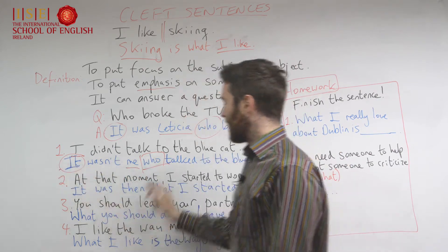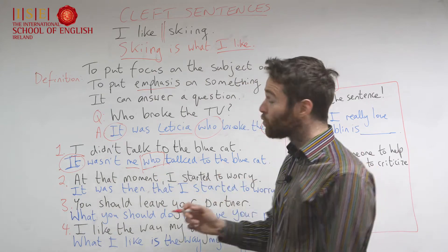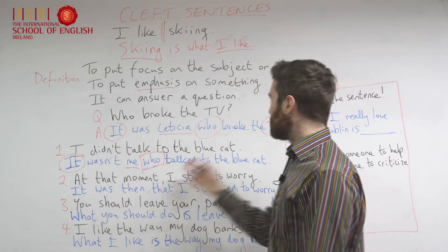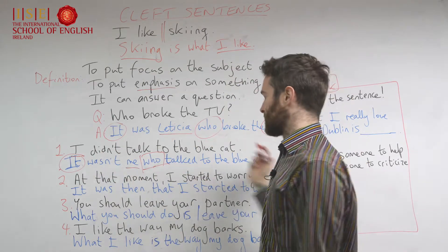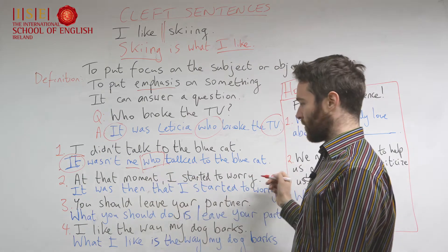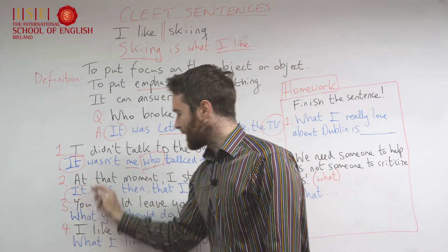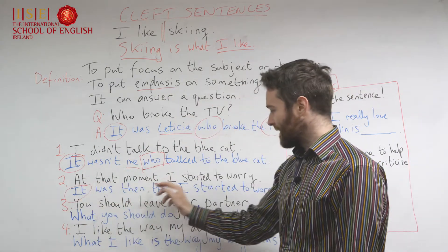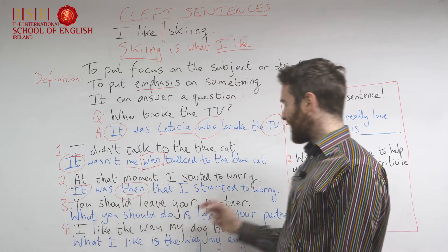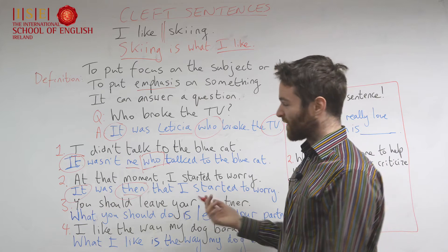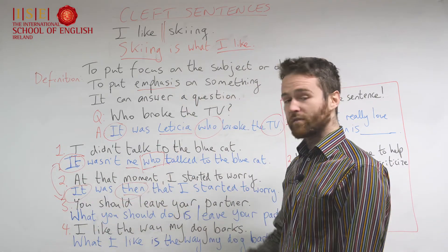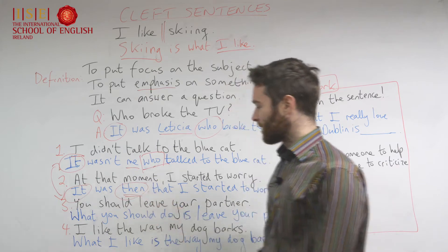The relative pronoun can be 'who,' 'which,' or 'that.' So: 'It wasn't me who talked to the blue cat' equals 'I didn't talk to the blue cat.' Second example: 'At that moment I started to worry' becomes 'It was then that I started to worry' — 'at that moment' and 'then' mean the same thing. That's one structure: 'it' plus a relative pronoun, or using the word 'then.'